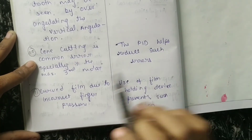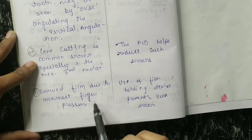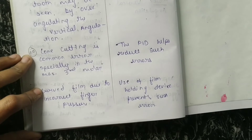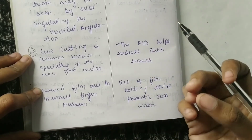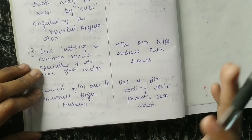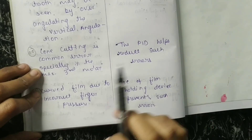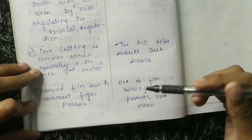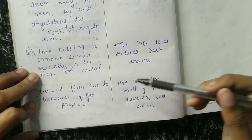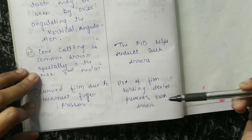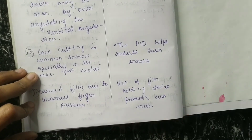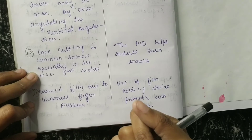The eleventh difference involves curved film due to incorrect finger pressure. In short cone, incorrect finger pressure causes image distortion. In long cone, use of a film-holding device prevents such errors, so this problem does not occur.